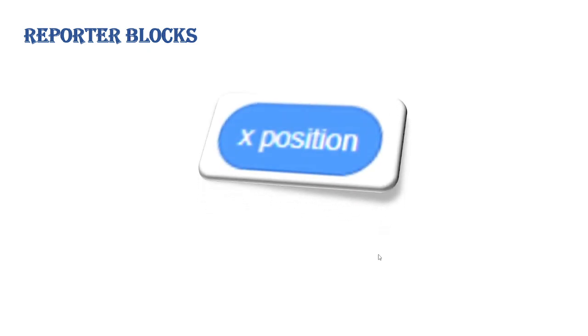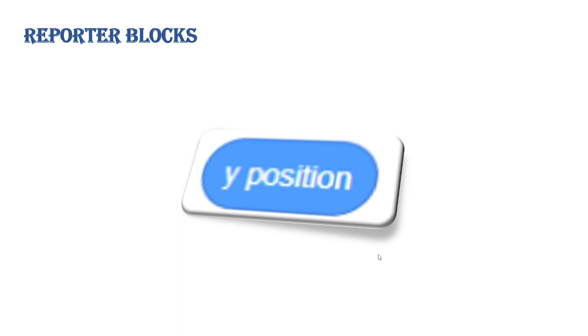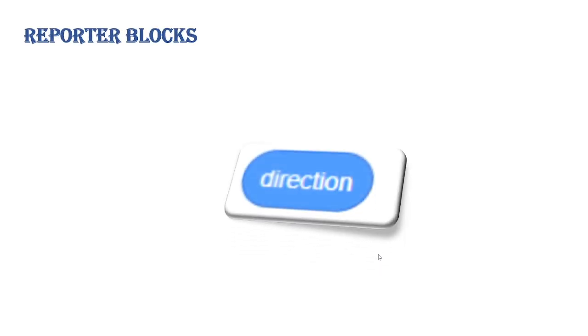Now let's talk about the reporter blocks. X Position holds the sprite's X axis position on the stage — it contains the horizontal position value of the sprite and monitors the sprite's horizontal position. Y Position holds the sprite's Y axis position on the stage — it contains the vertical positioning value of the sprite and monitors the sprite's vertical position. Direction holds the direction of the sprite on the stage and measures the direction of the sprite in degrees.